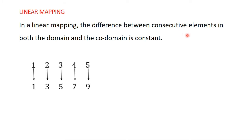We are saying that the difference between consecutive elements in both the domain and the codomain is constant. What is the difference between one and two? It's one. The difference between two and three is one, between three and four is one, between four and five is one. So the difference between consecutive elements in the domain is constant. For the codomain too: the difference between one and three is two, between three and five is two, between five and seven is two, between seven and nine is two. So if it is a linear mapping, the difference between consecutive elements in the domain and consecutive elements in the codomain must all be constant.